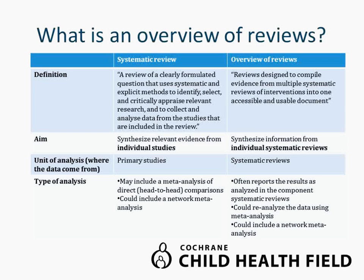In terms of type of analysis, a systematic review may include a meta-analysis, typically involving a direct or head-to-head comparison such as treatment A versus treatment B or placebo. A systematic review could also include a network meta-analysis, which is a more sophisticated evolving analysis including both direct and indirect evidence. An overview of reviews often reports results as analyzed in the component systematic reviews, but can reanalyze data using meta-analysis or network meta-analysis, although this is not commonly seen currently in overviews.